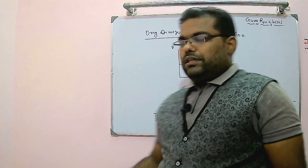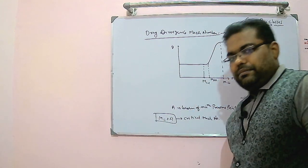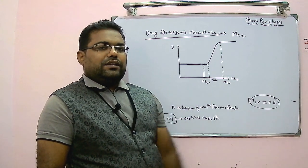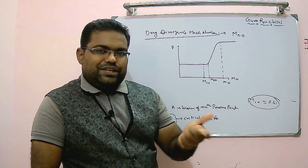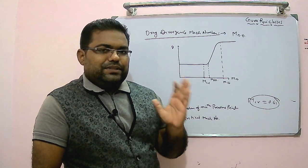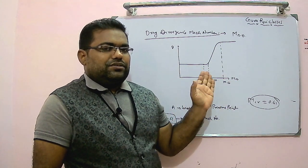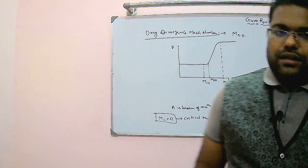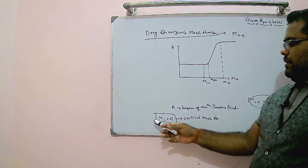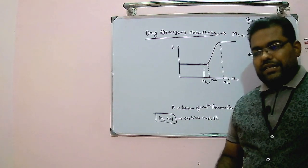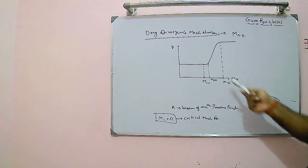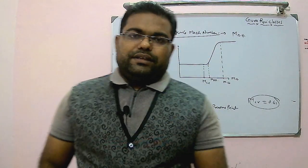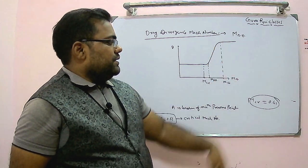The drag divergence Mach number is the local Mach number at which drag increases abruptly. It will always be less than one — M equals one is somewhere further along the curve. The drag divergence Mach number will lie between 0.7 and 0.9. At that Mach number there is a sudden increase in drag. These are the three Mach numbers used in finding performance parameters: the critical Mach number marks the initiation of drag rise, and the drag divergence Mach number is where drag increases abruptly.